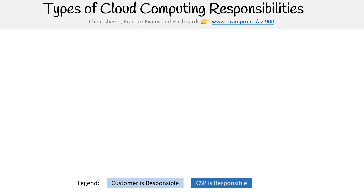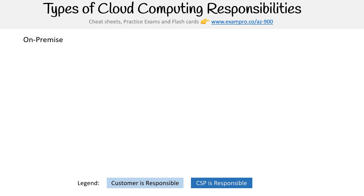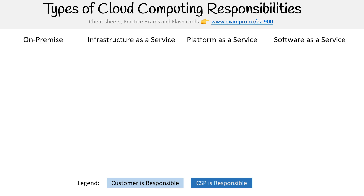So let's lay out our categories. We're going to include on-premise into this because technically on-premise could be a private cloud and should be in the category here. So we have on-premise, infrastructure as a service, platform as a service, and software as a service.